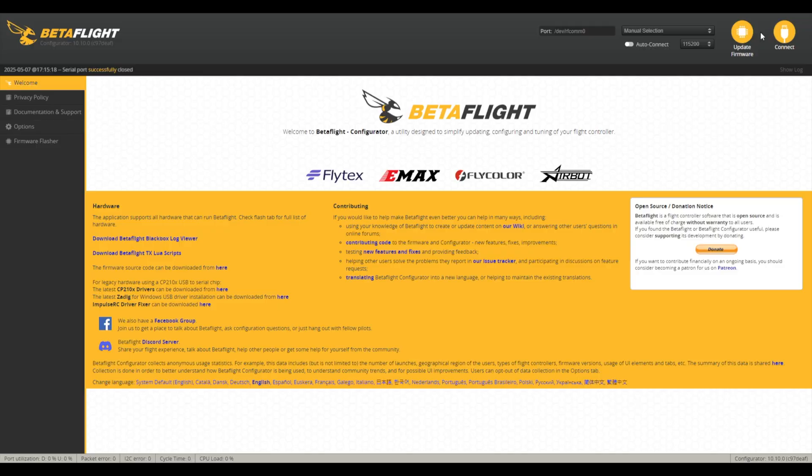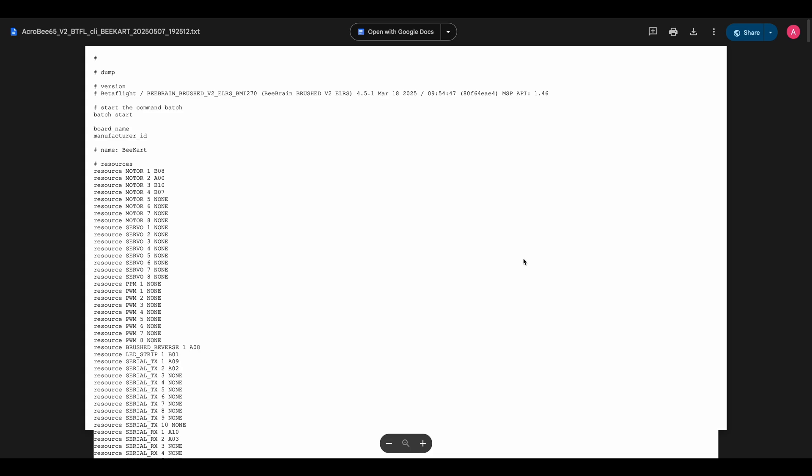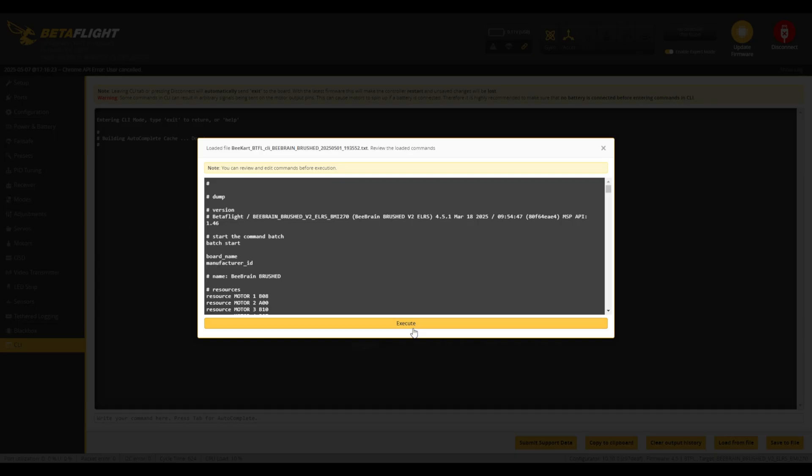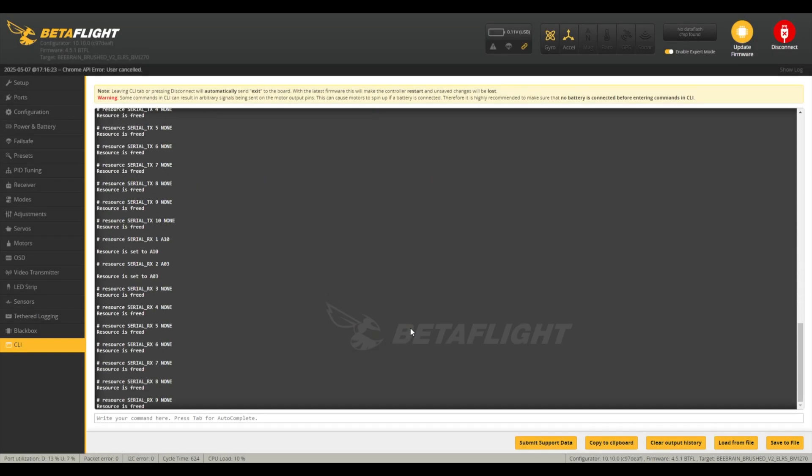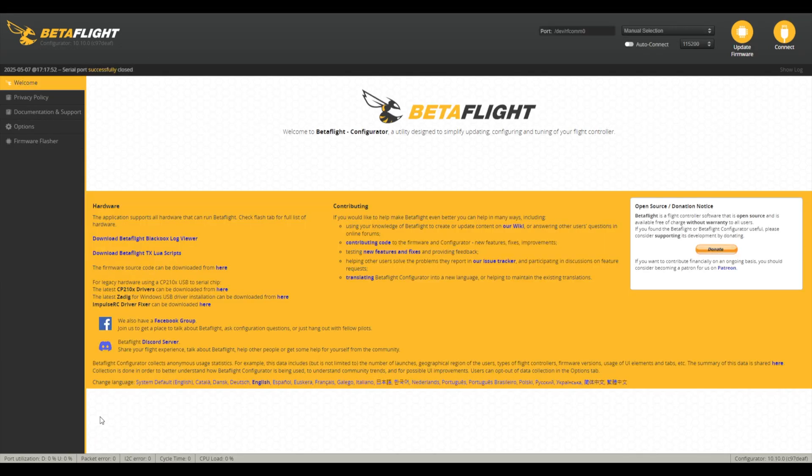So, before we start drifting, you want to go ahead and make sure that you plug in your whoop into Betaflight. Download the CLI dump from the description. Copy it. Go into the CLI tab. Paste it onto Betaflight CLI. Type save. Then, you should be good to go and ready to drift.